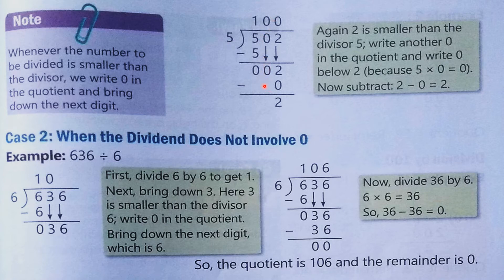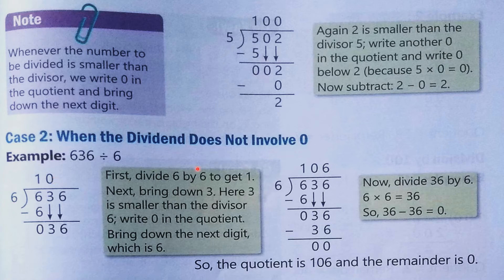Now division when the dividend does not involve 0, but 0 appears in the quotient. So 636 divided by 6. 6×1=6, done. Then we have 3, which is smaller than 6. So we write 0 in the quotient and bring down 6, making 36. 6×6=36. So the answer is 106 — quotient is 106, remainder is 0.